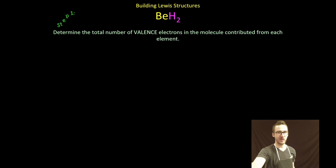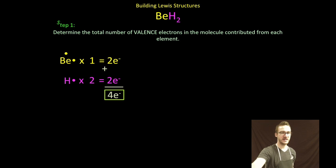Step one, determine total number of valence electrons in the molecule contributed from each element. Beryllium's going to have two valence electrons, hydrogen's going to have one. I've got one atom of beryllium contributing two valence electrons total and two atoms of hydrogen, each contributing one valence electron for a total of two contributed to the entire molecule. In total, my number of valence electrons here, four.